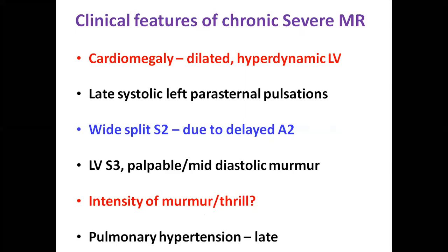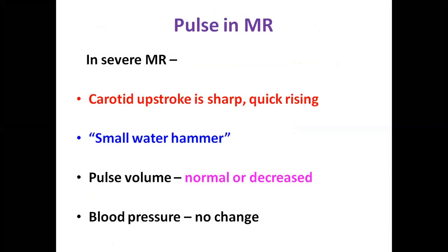Pulmonary hypertension can occur in patients with acute MR or in late stages of chronic MR. A commonly asked question about pulse in MR: in severe MR the carotid upstroke is sharp — called a small water hammer pulse. The carotid upstroke is quick and sharp, but there is no collapsing pulse, no change in blood pressure, and the pulse volume is normal or even decreasing in severe MR. It is only the rapid upstroke they call a small water hammer pulse.